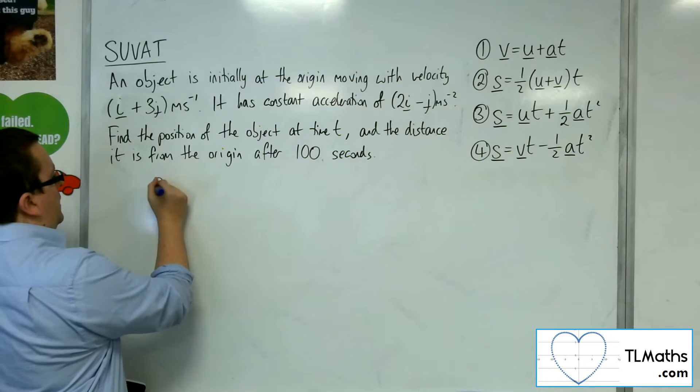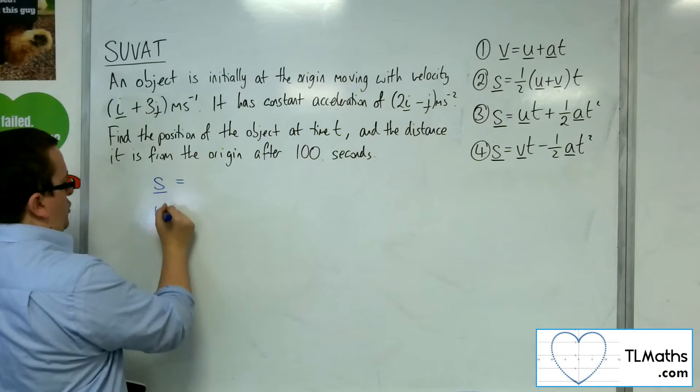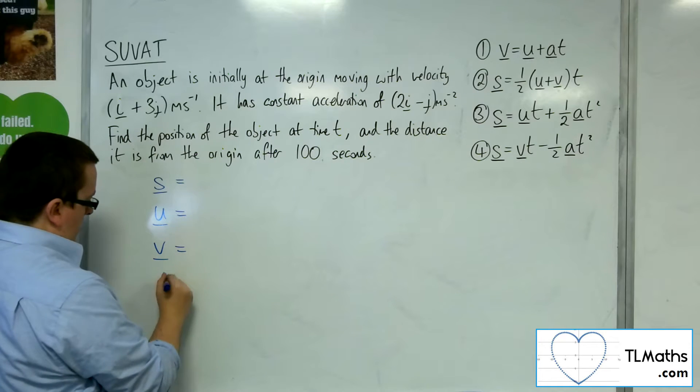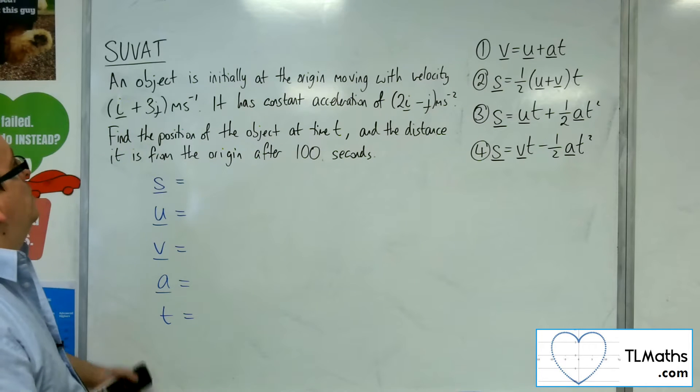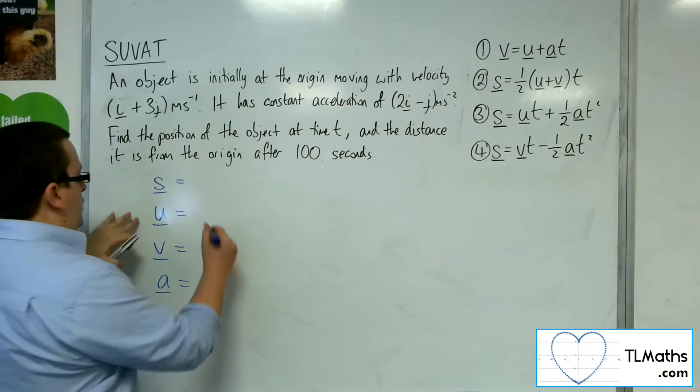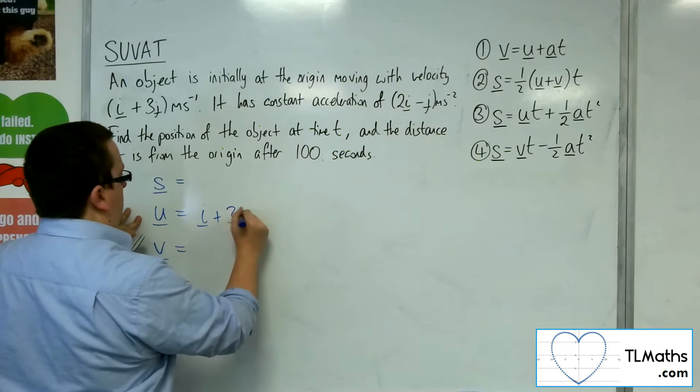OK, so s, u, v, a, and t. So the initial velocity is i plus 3j.